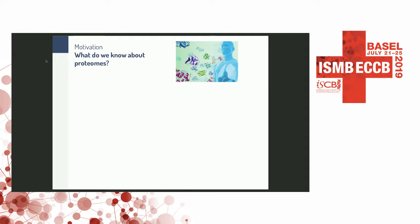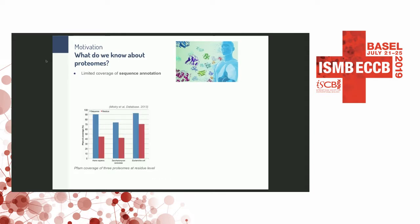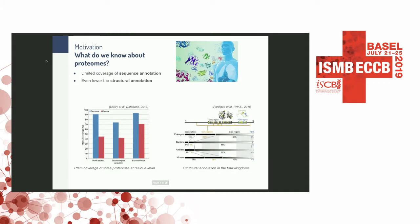The main motivation is this question: what do we know about proteomes? The answer is very little — both in terms of sequence annotation and structure annotation. Here you see Pfam annotations of protein domains and protein families for three organisms. Not even 50% of human residues are annotated with a Pfam domain. Similarly, only about 4% of eukaryotic genomes are annotated with structure, and the dark areas represent structures we cannot reconstruct or model.